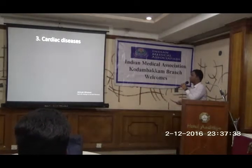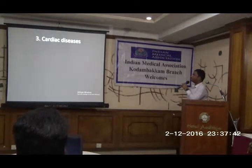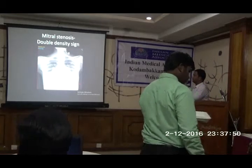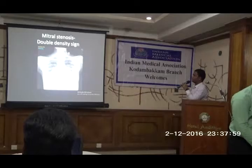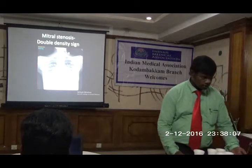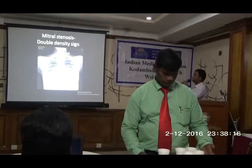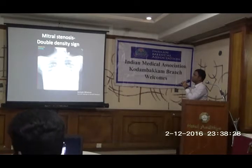Now we come to certain cardiac conditions. It is called the double density sign in case of mitral stenosis. You are seeing the left heart border and a straight border, and in between in the retrocardiac area there is another small opacity — that is the double density sign. Also, you are seeing the splaying of the carina — normal carina angle should be less than 100 degrees, here it is more than 100 degrees. The double density is because of the enlarged left atrium. Also, you will see cephalization of the vessels (pulmonary veins) — this is called the inverted moustache sign, seen in pulmonary venous hypertension.